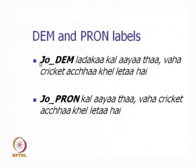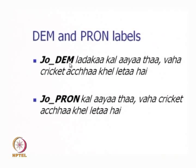Consider the sentence: 'Jo larka kal aaya tha, wo cricket accha khel leta hai' — meaning 'The boy who came yesterday plays cricket well.' The word Jo here has the tag DEM (demonstrative): Jo_DEM, because it specifies a particular boy. Now in 'Jo kal aaya tha, wo cricket accha khel leta hai,' larka is dropped, so Jo must find its referent elsewhere — something not present in the sentence. This Jo can be matched with 'wo' through a Jo-Wo combination.